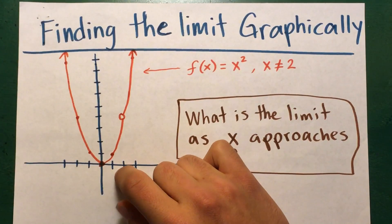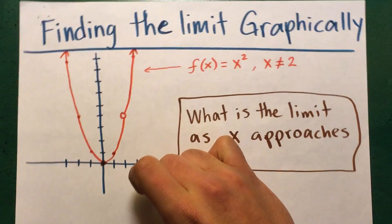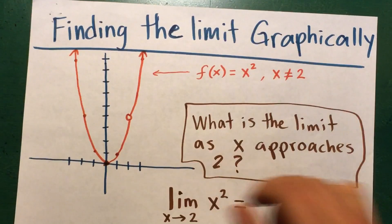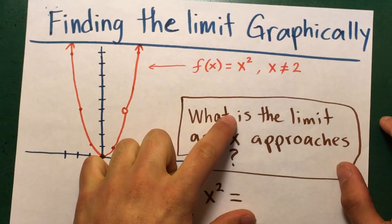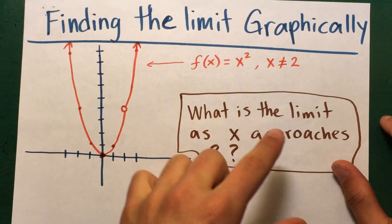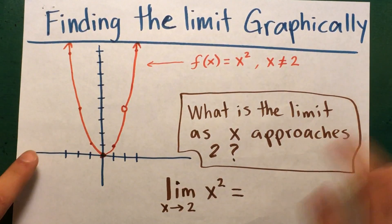And on the graph because x cannot be 2, we have this open circle or a hole. So this hole we're going to analyze it and the question goes: what is the limit as x approaches 2?